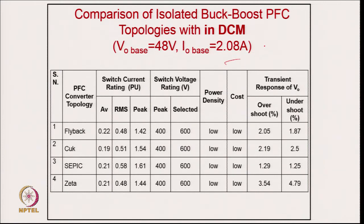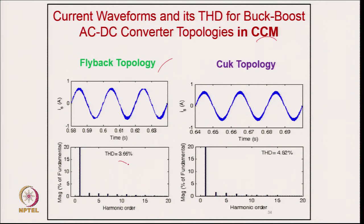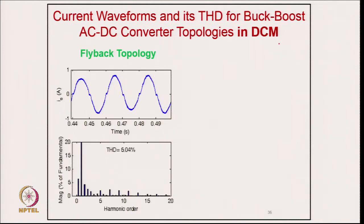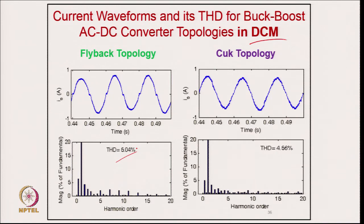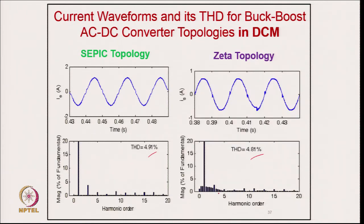The switch ratings and relative switch ratings for all four converters are compared, including switch current rating, voltage rating, and transient response. In CCM, the flyback topology gives a supply current THD of 3.66%, CUK gives 4.52%, SEPIC gives 4.78%, and Zeta gives 3.48%. In DCM at 100 watts with 48 volts output: flyback gives ~5%, CUK gives 4.56%, SEPIC gives 4.91%, and Zeta gives 4.81%.